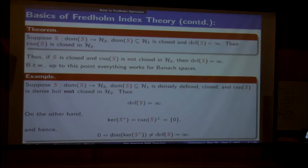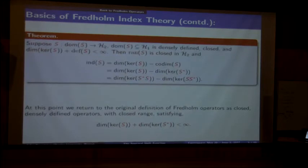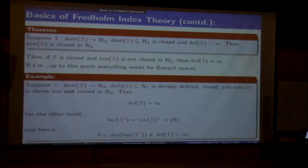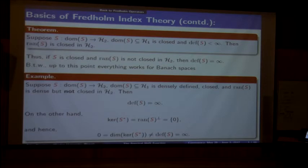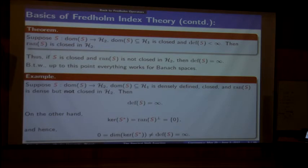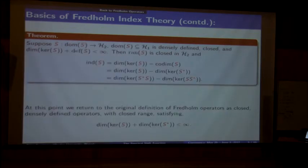Here's a summary of when both versions fit nicely together—the slightly more restrictive version from last time and the more general version. Everything said so far, except for the example, works for Banach spaces. The example uses orthogonal complement, so there I'm in a Hilbert space, but you could cook up a similar example in a Banach space. Here's a theorem that puts all the definitions together and shows they're all nicely consistent.